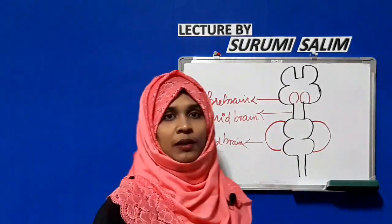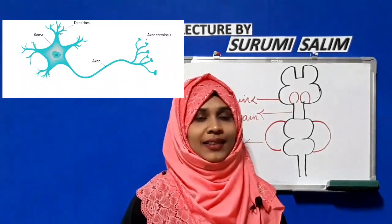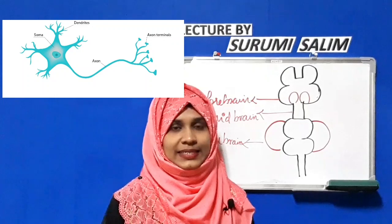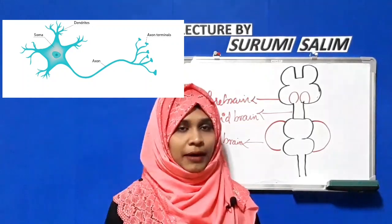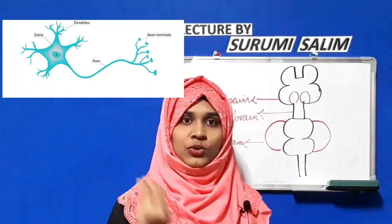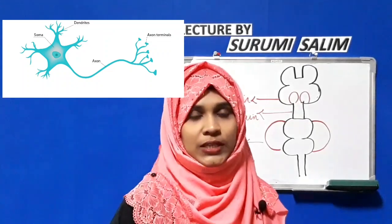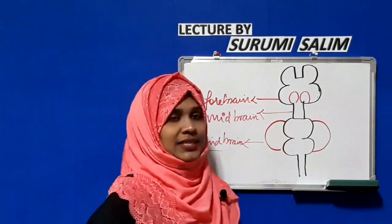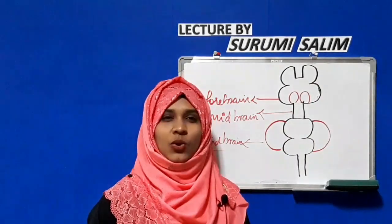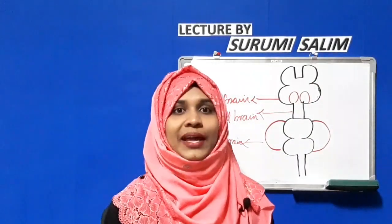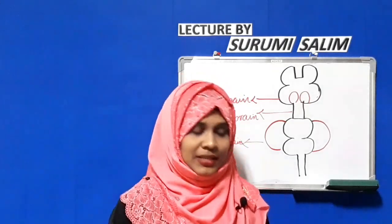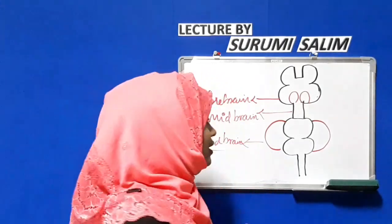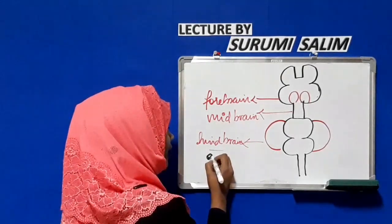The cerebral hemisphere is a wide area containing a large number of neurons. Neurons are the structural and functional unit of the central nervous system — they are called the true cells of the CNS. In the cerebral hemispheres you can see the cerebral cortex, and you may have heard about gray matter and white matter.